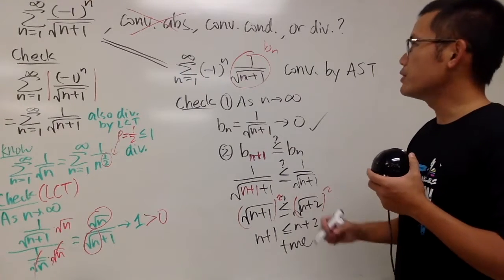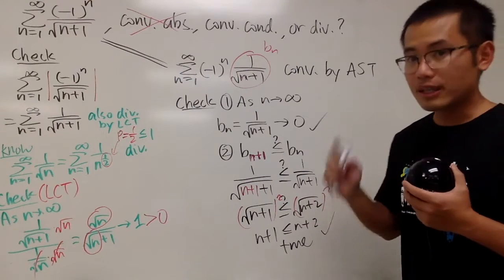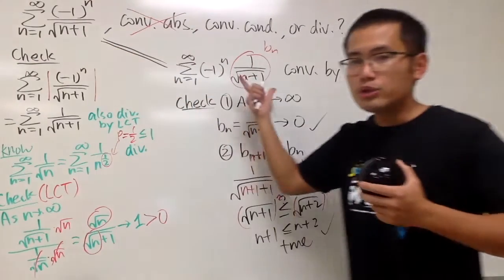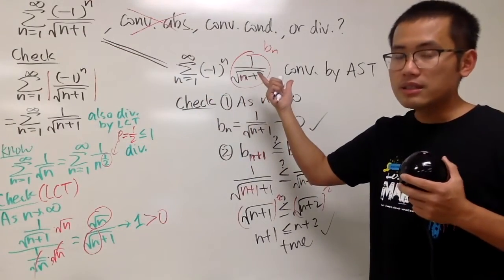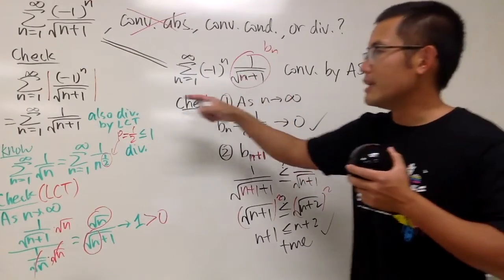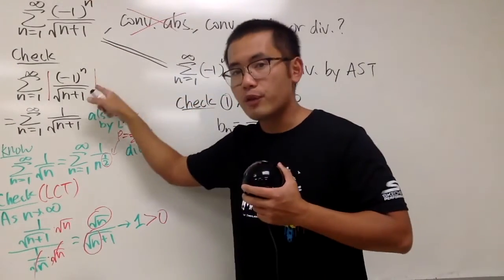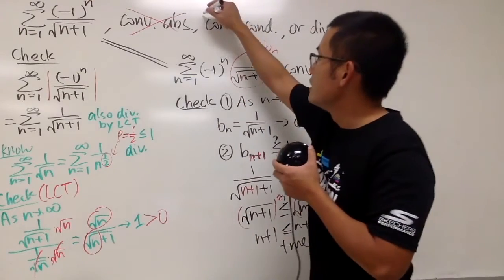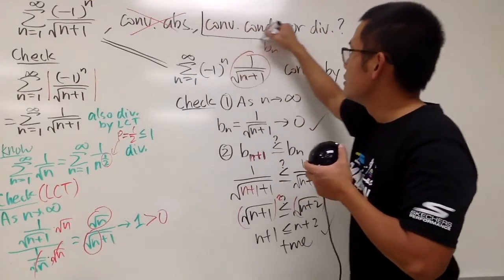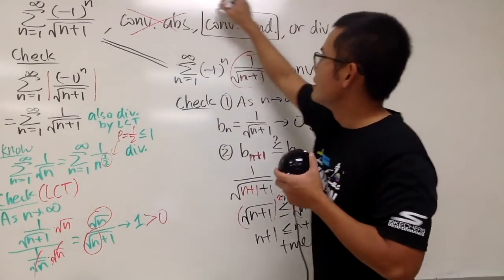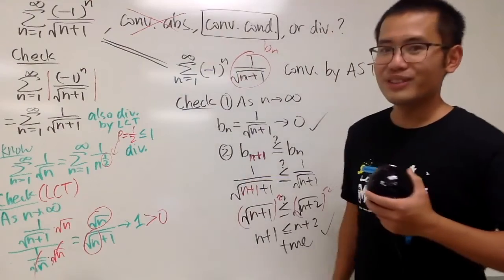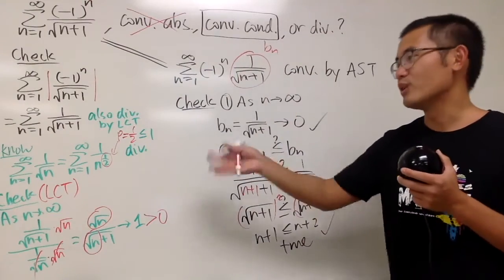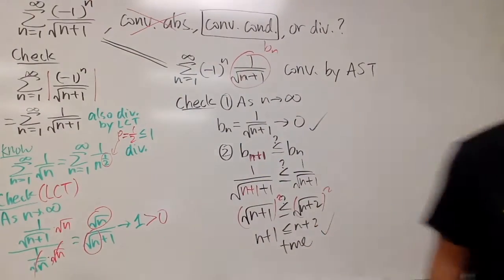The original series converges, but the absolute value version doesn't. So this is conditional convergence. Know the definition and know what checks you have to do.